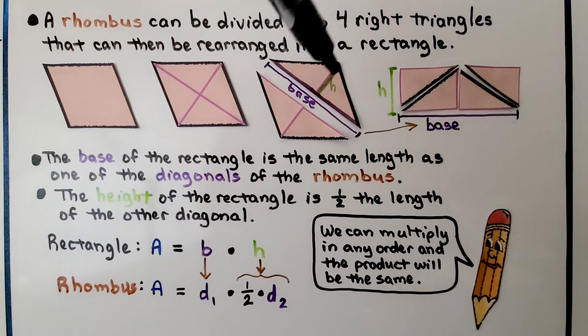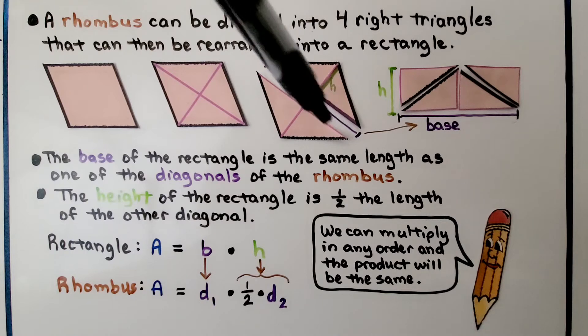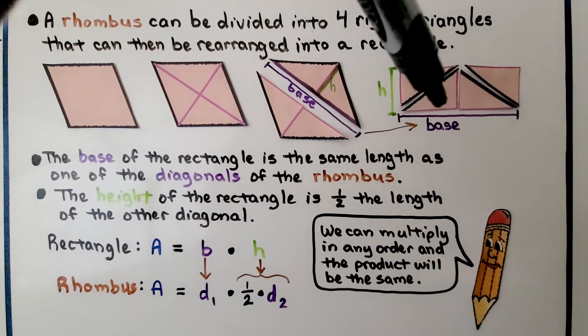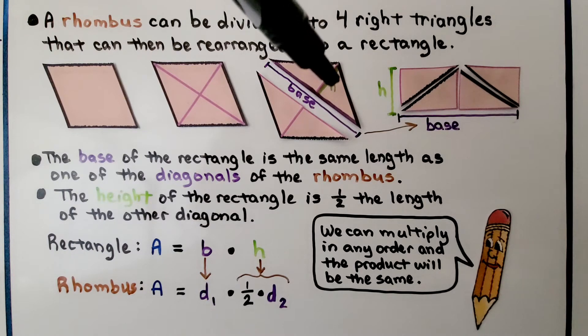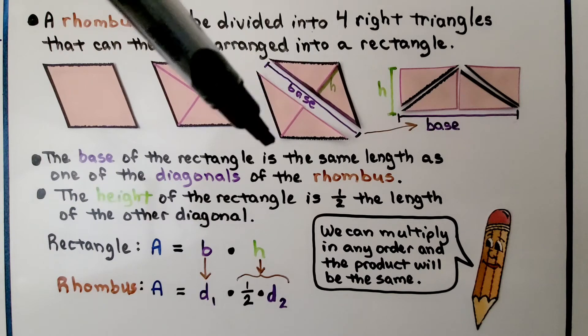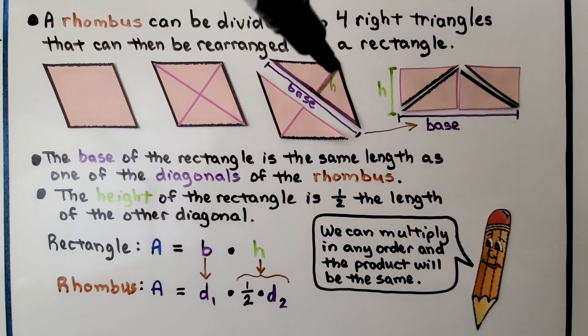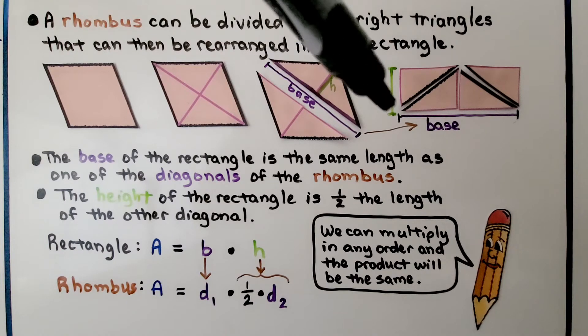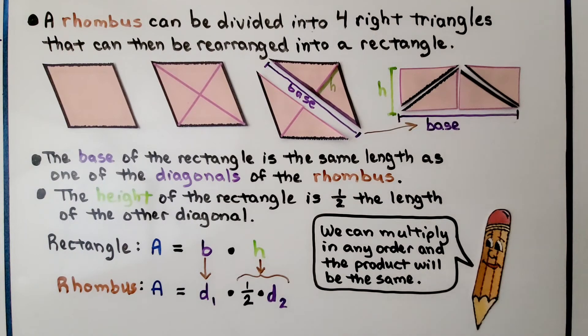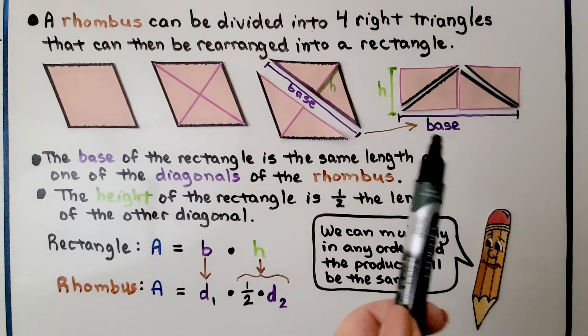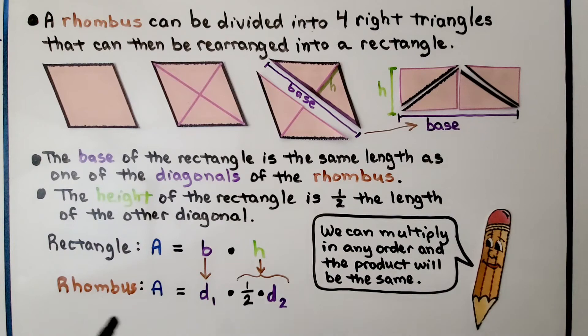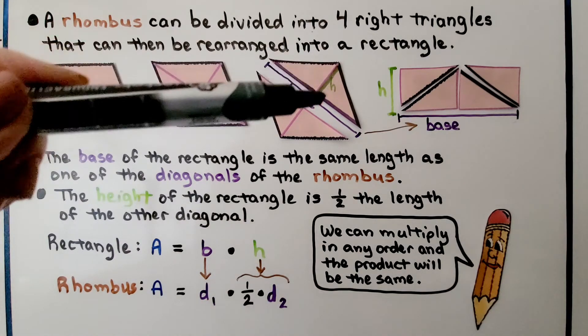The height of the rectangle is half—this little piece right here is the height of the rectangle. It's half the length of the other diagonal. So here we have one diagonal that's the length of the base, and this little half diagonal is the height of our rectangle. The area for a rectangle is base times height.